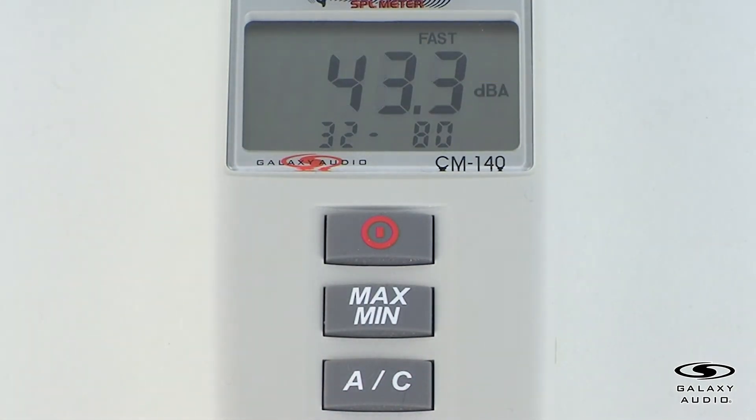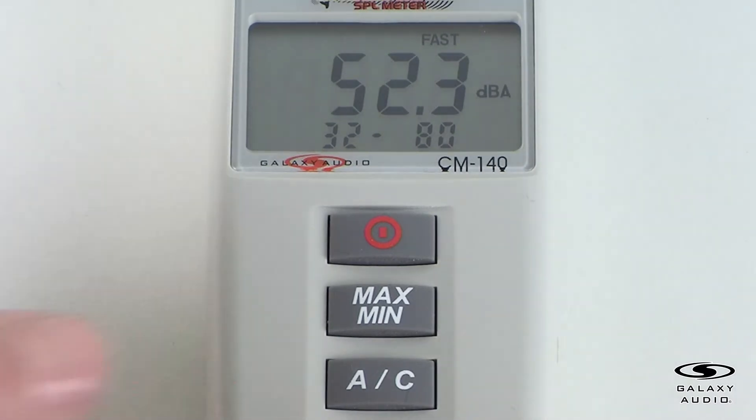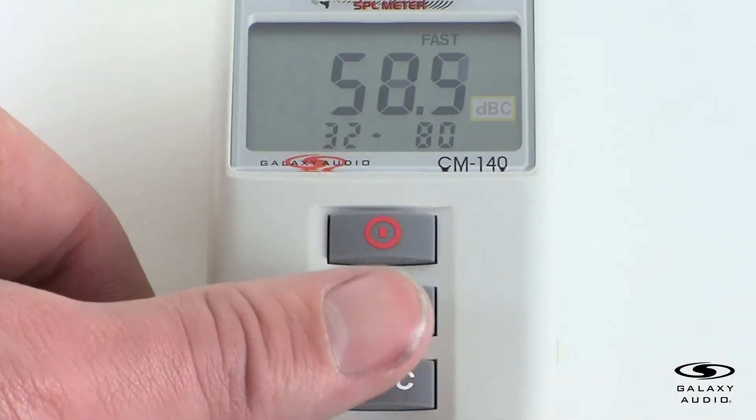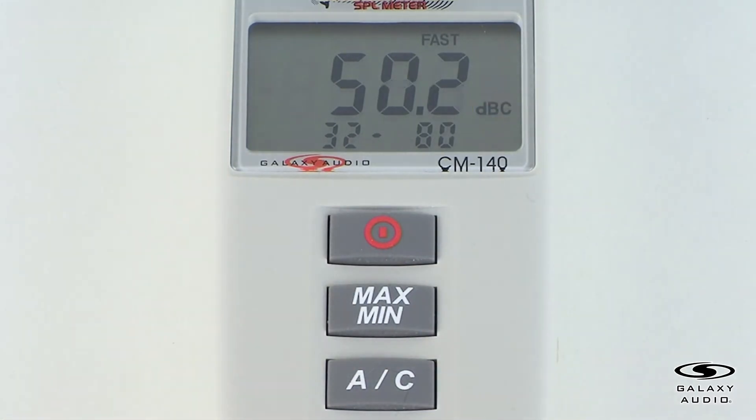When measuring sounds that have a large low-frequency component or consistently above 95 decibels, such as live music or machinery, use the C weighting setting. If the C-weighted level is much higher than the A-weighted level, there will be a large amount of low-frequency content.